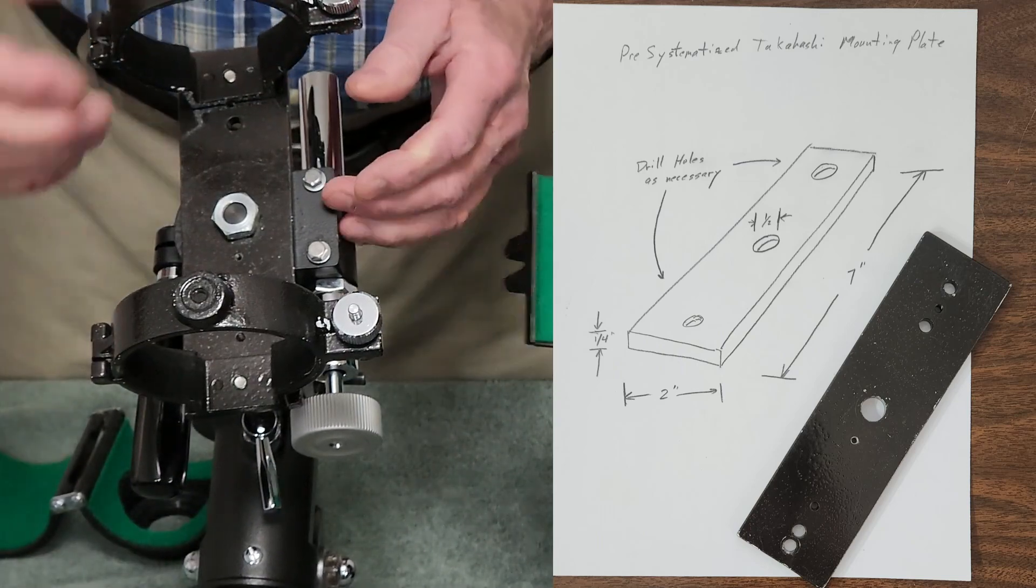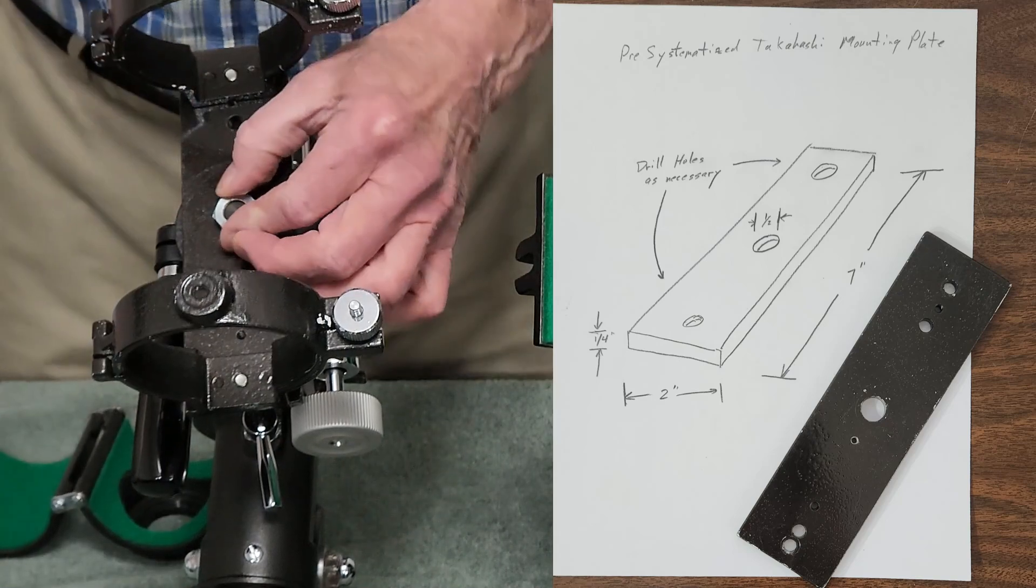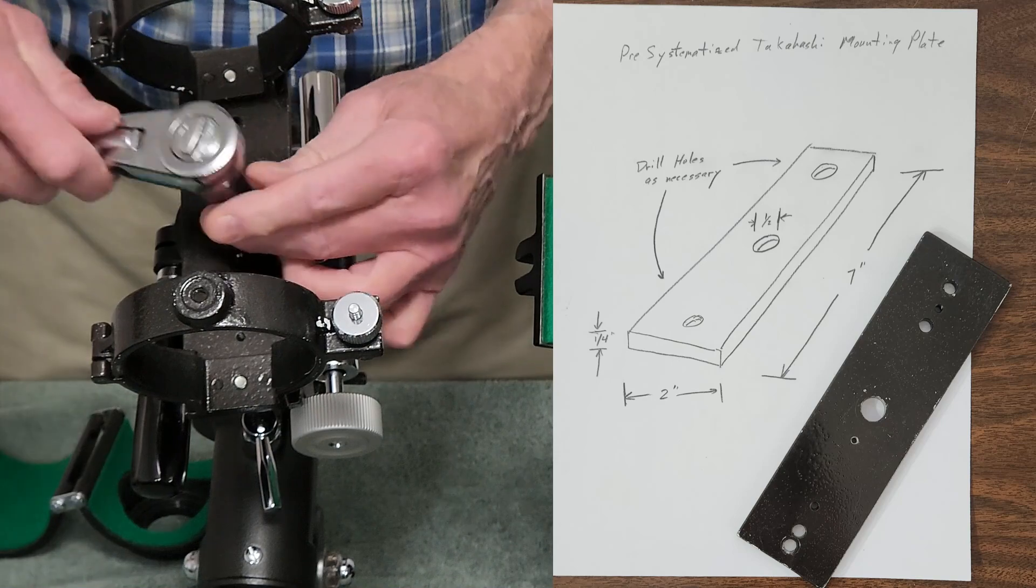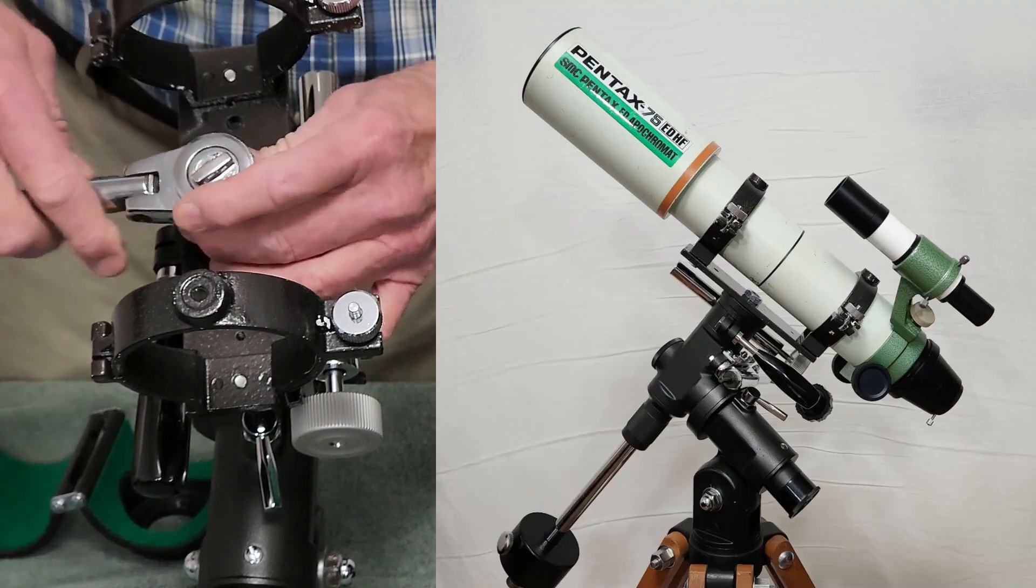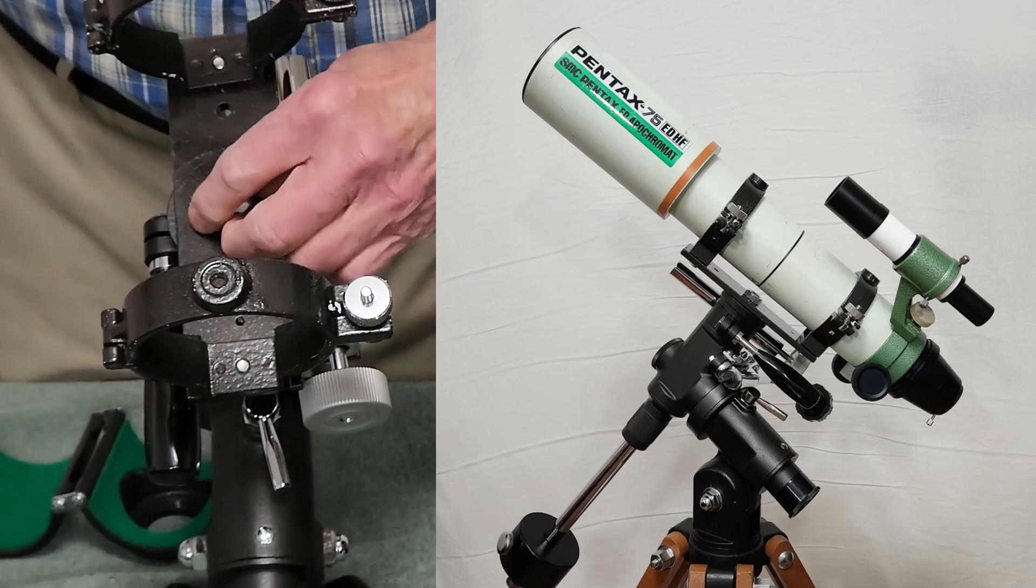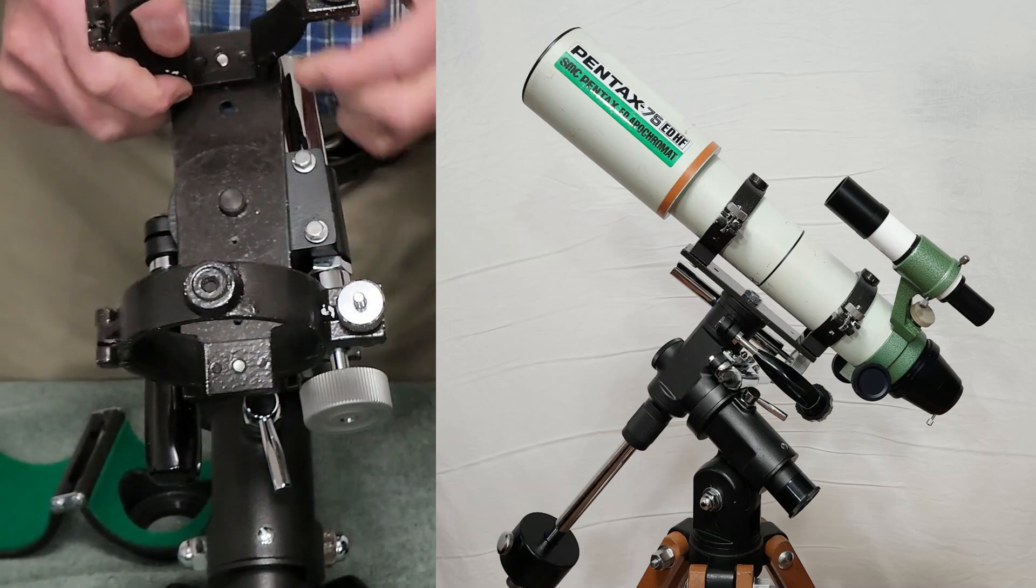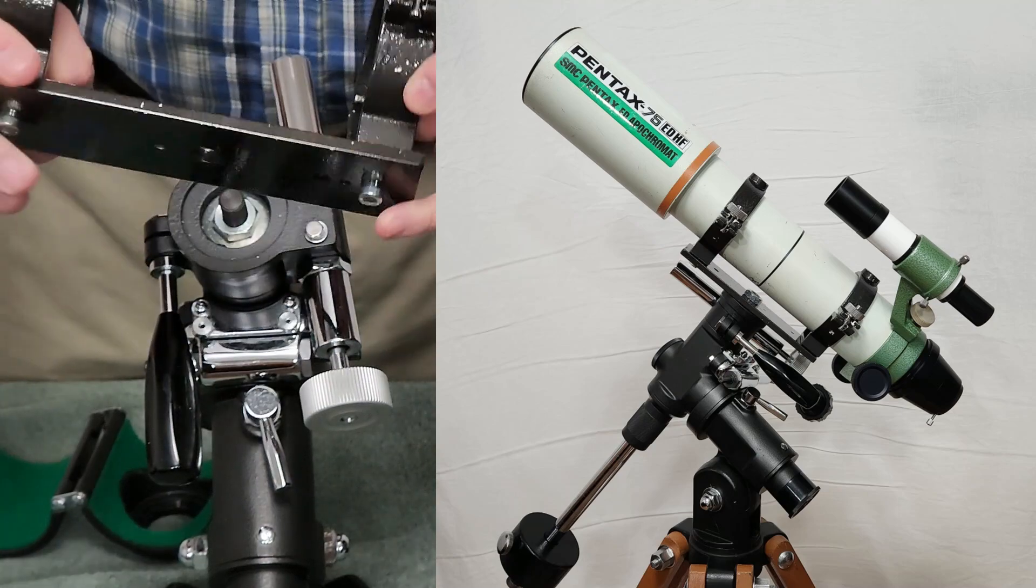And now you've got a mount that you can use different telescopes. You can put whatever rings on there you want, and so forth. So that's one simple thing you can do. Just make yourself a plate like so.